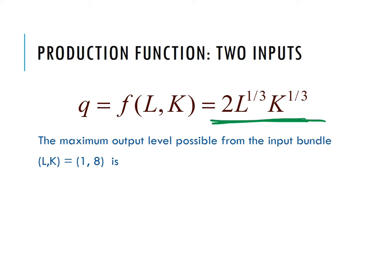The maximum quantity that can be produced with one worker and eight units of capital is two times one to the one-third times eight to the one-third. That is two times one, and eight to the one-third is two, so we have a quantity of four.